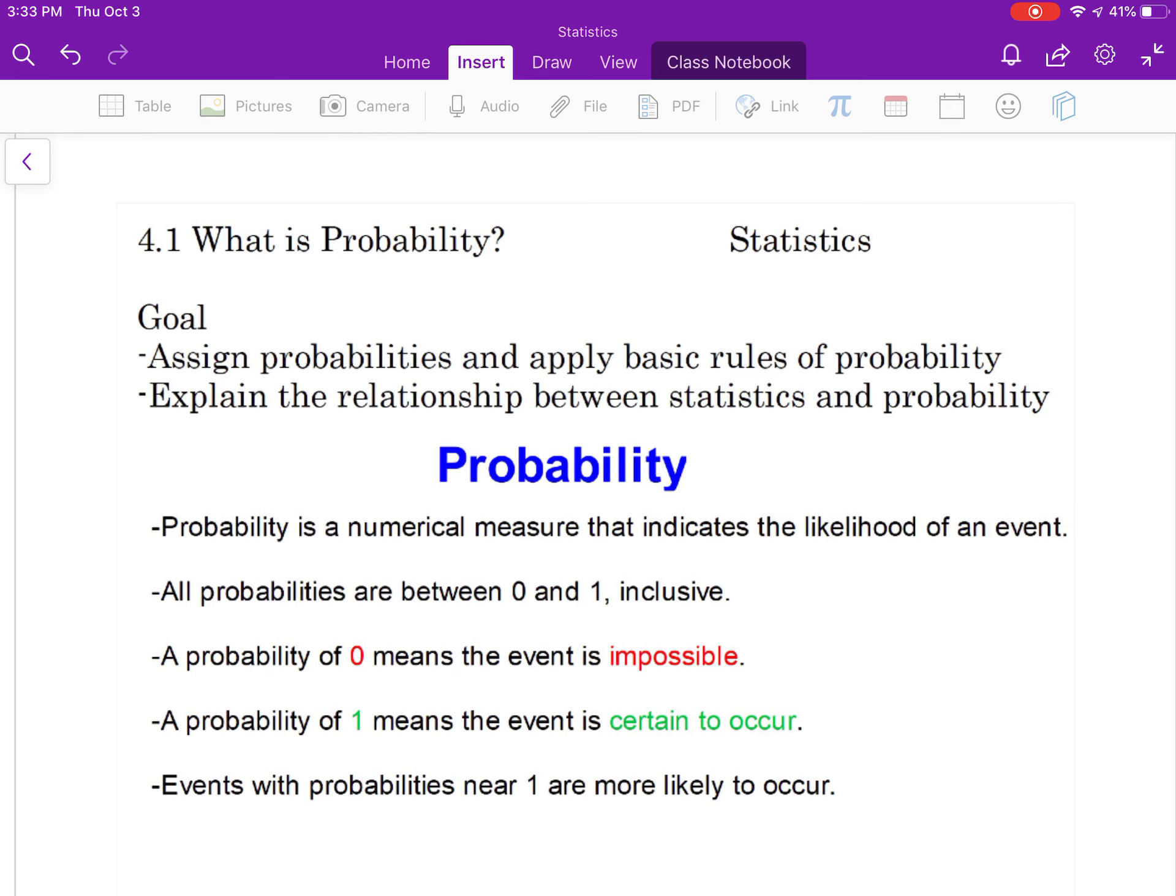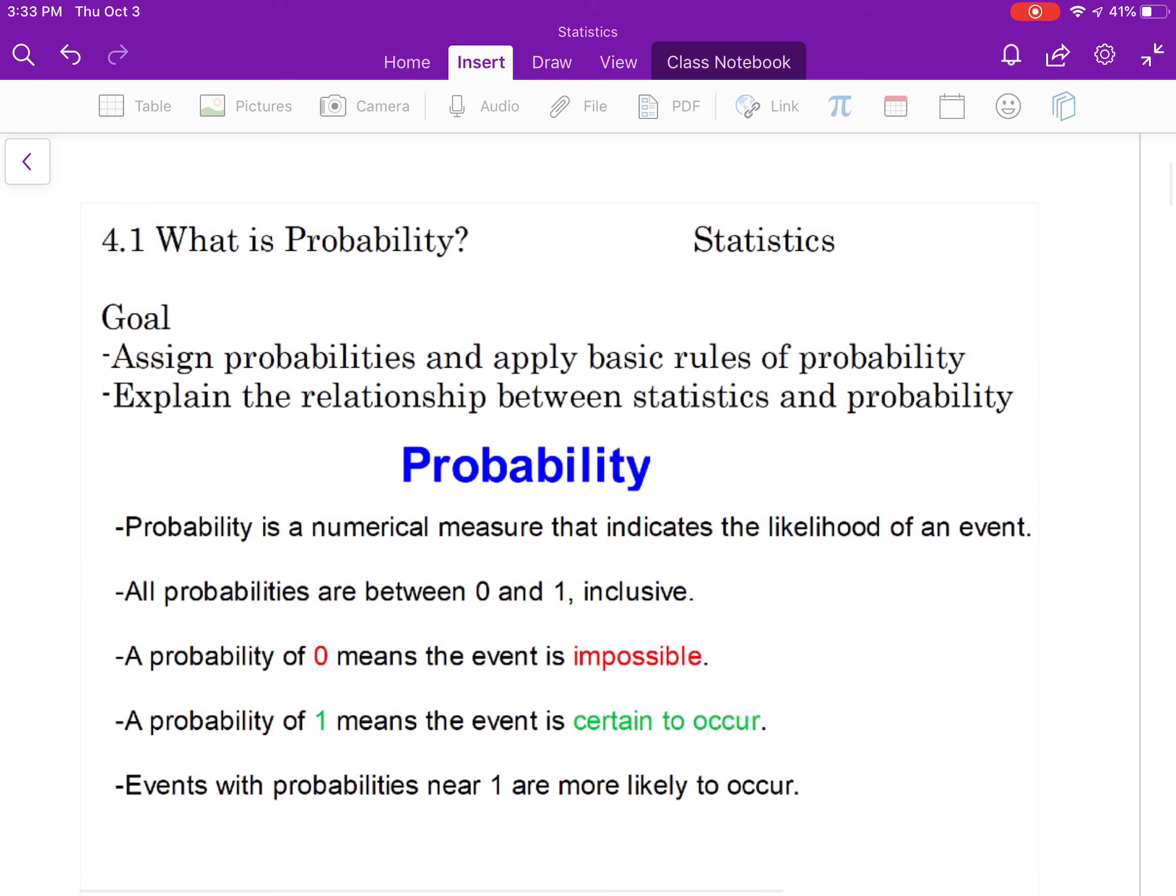When I'm talking about probabilities of 0 and 1 and being inclusive, 0 means nothing is possible, 1 means that it is certain to occur. Your highest probability could be 1, your lowest probability could be 0.